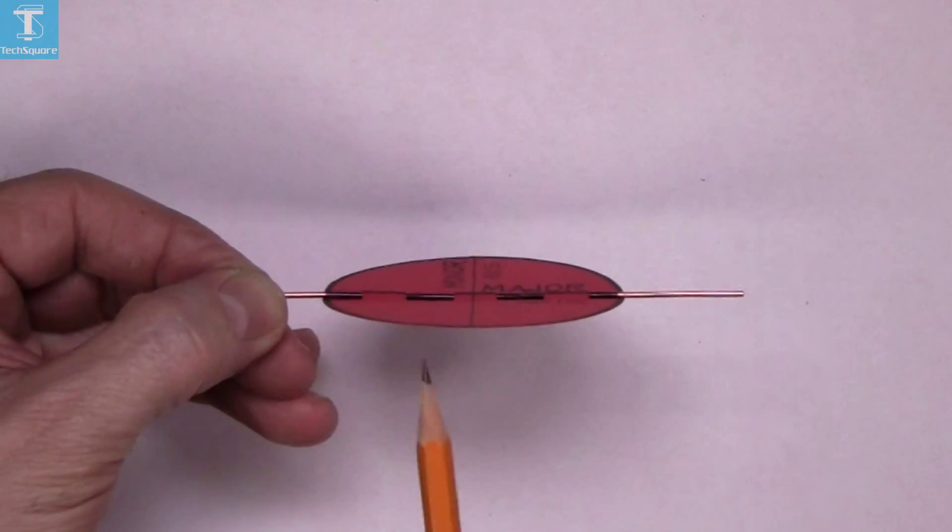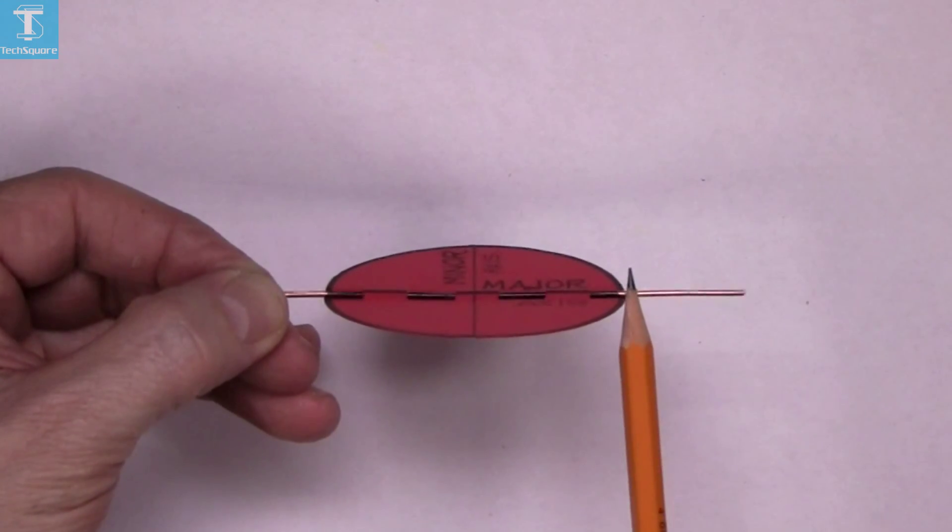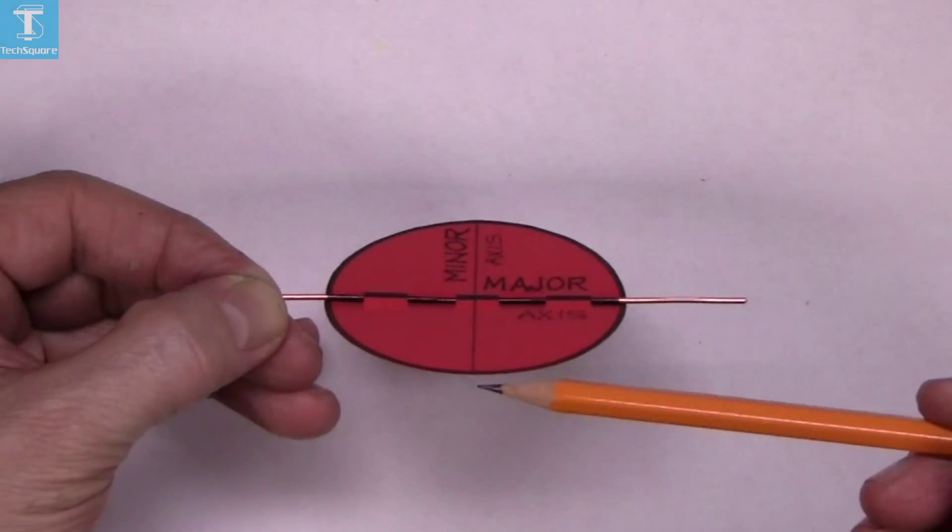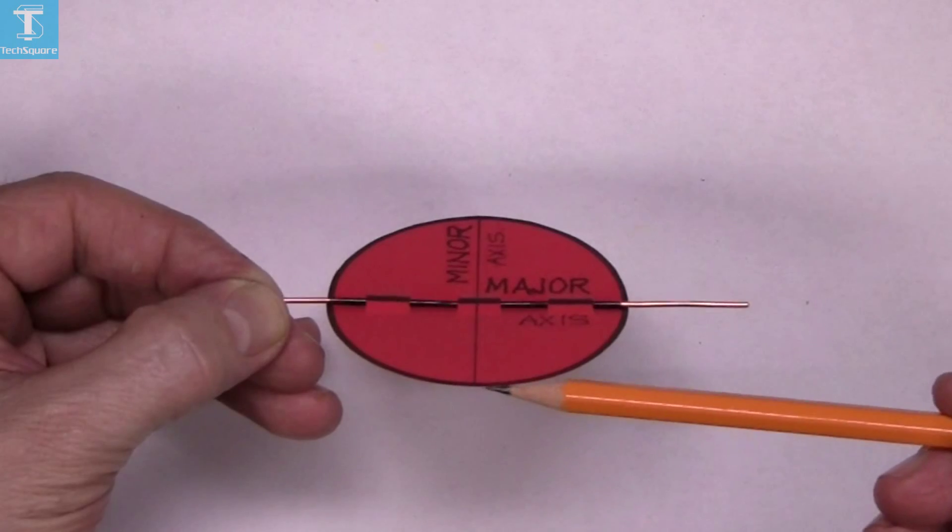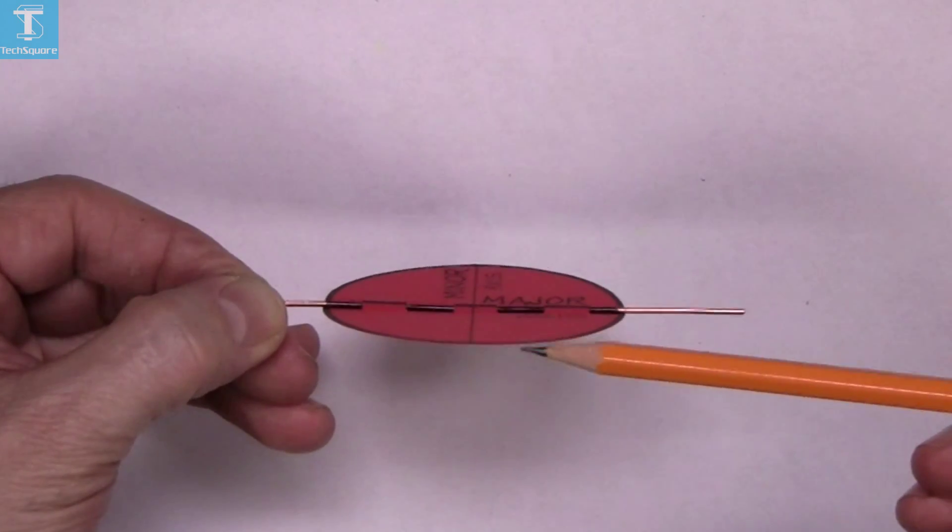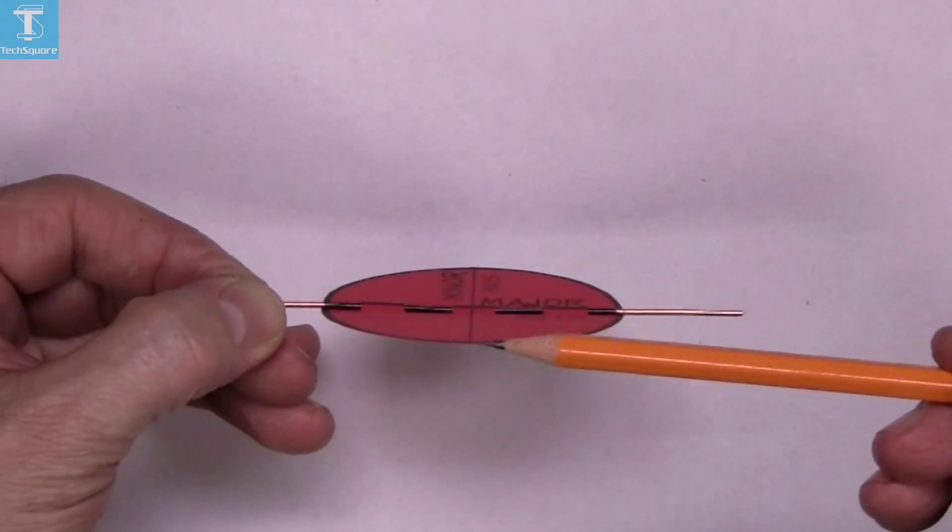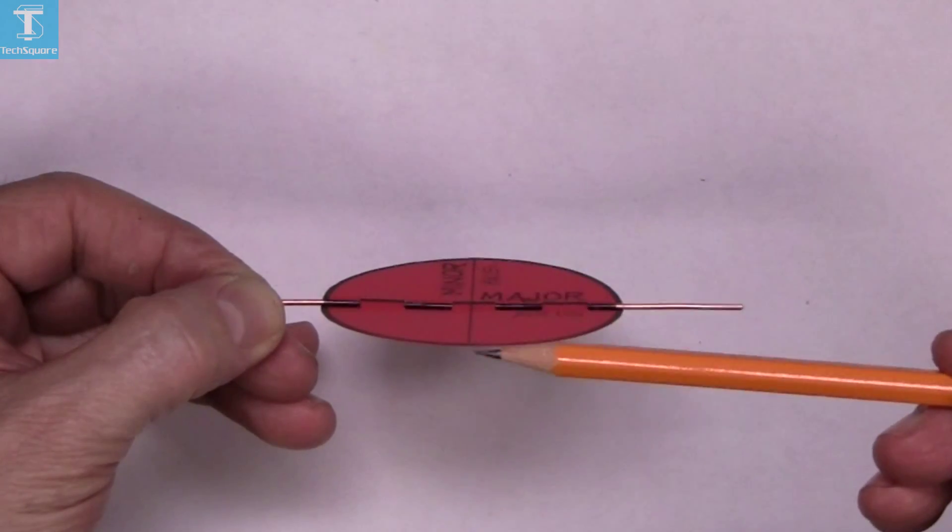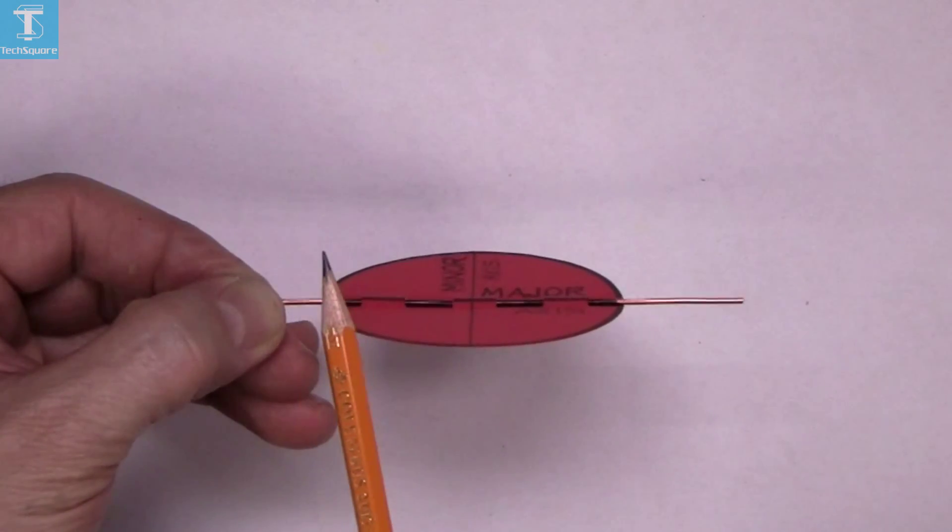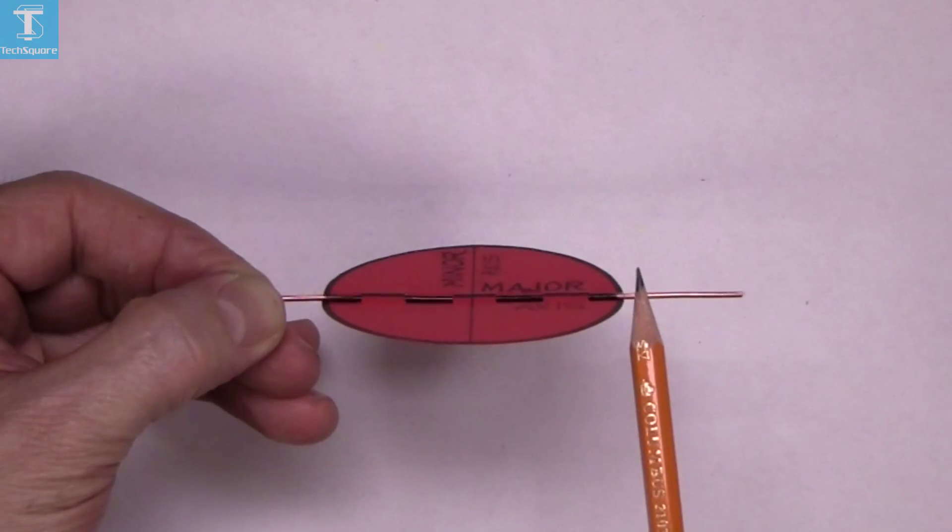The length of that line doesn't change, but the length of this line here gets shorter as we rotate it. That distance there gets less and less as it rotates. That's called the minor axis, and this length here is the major axis.